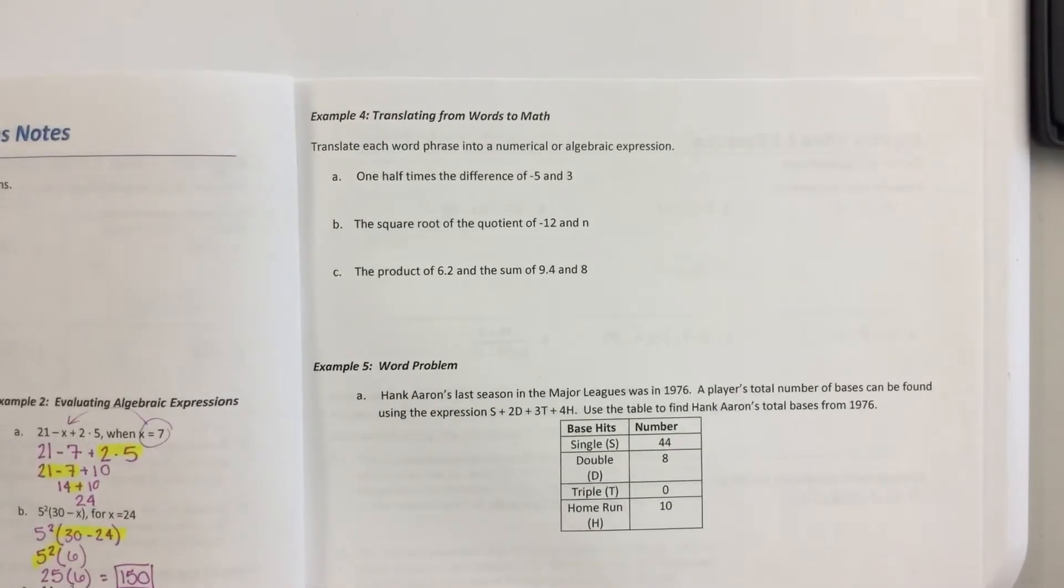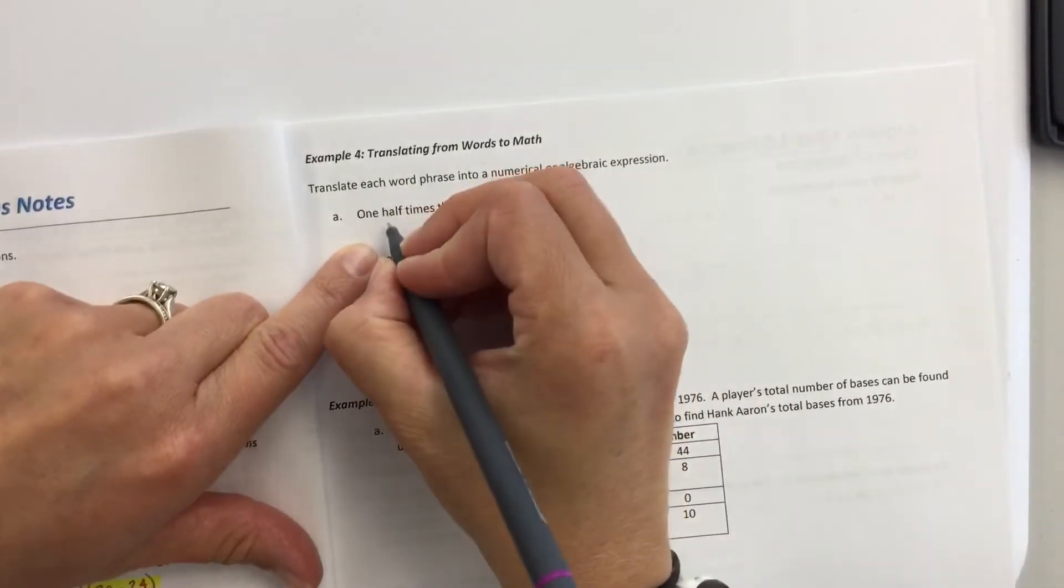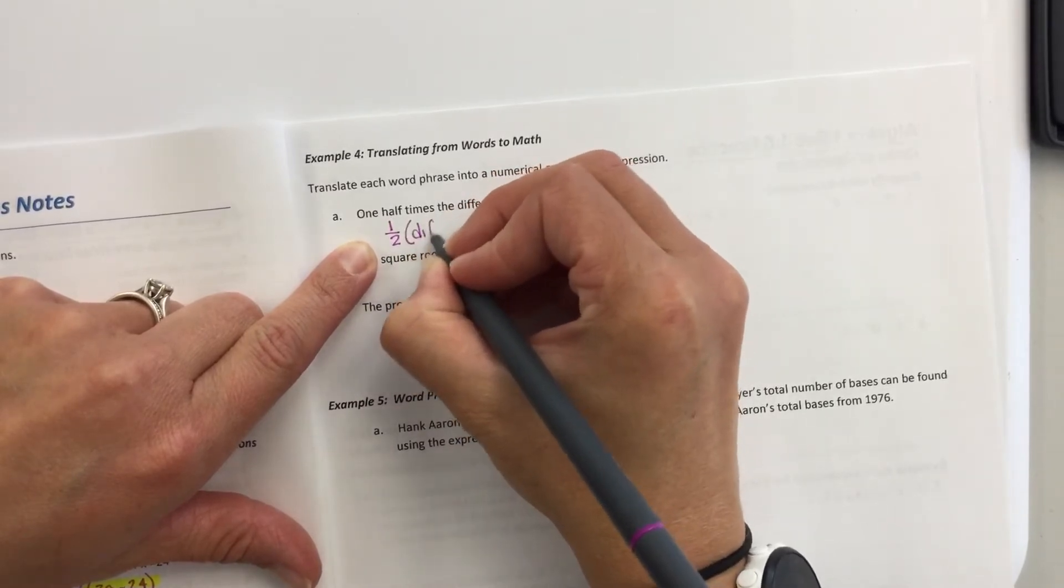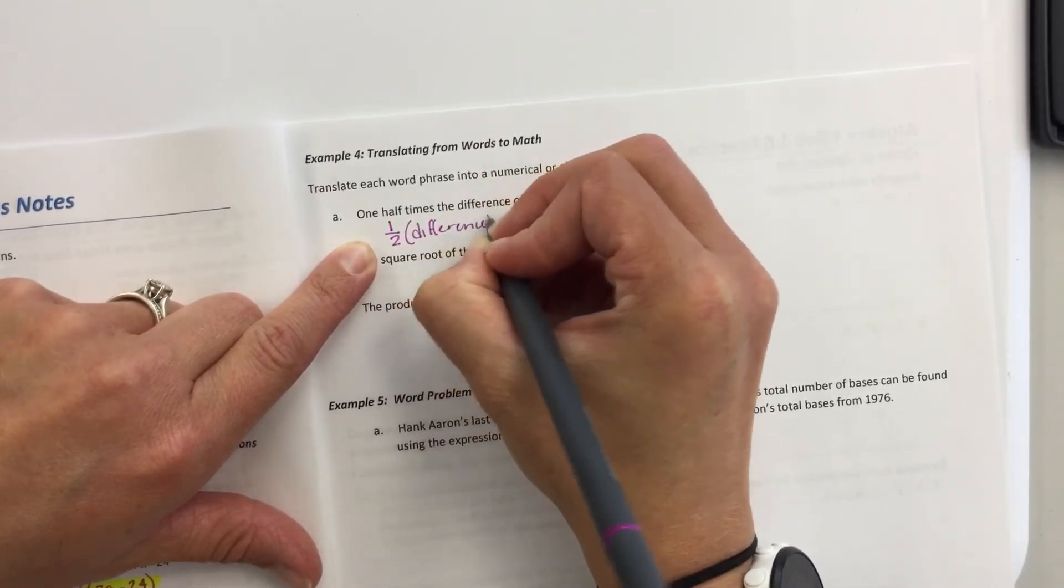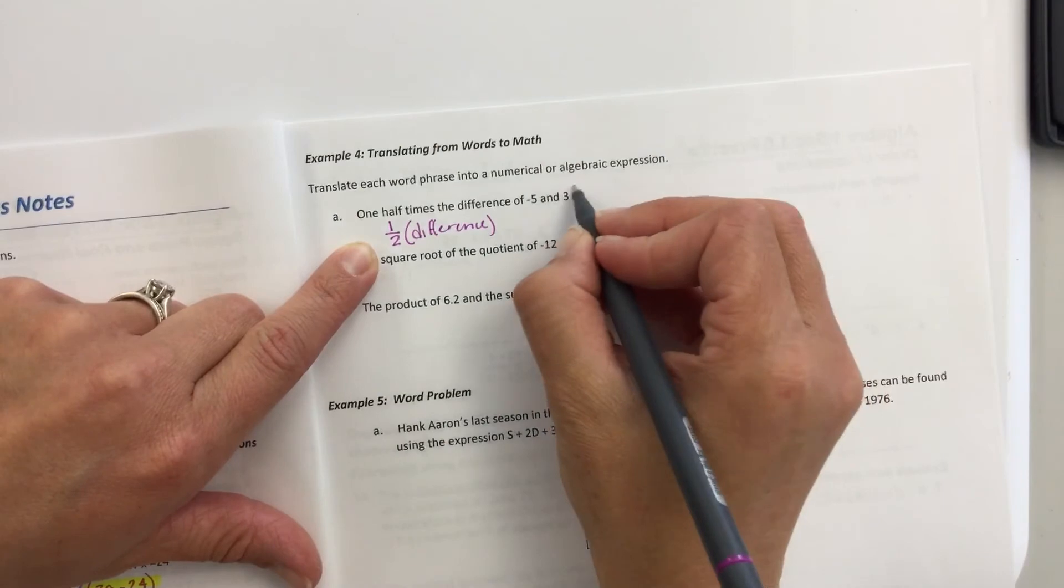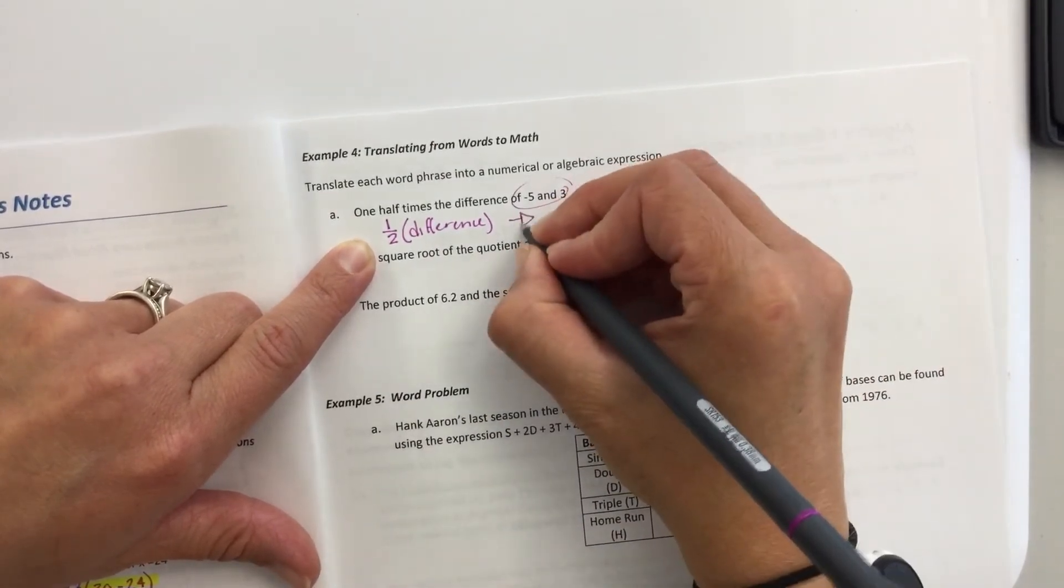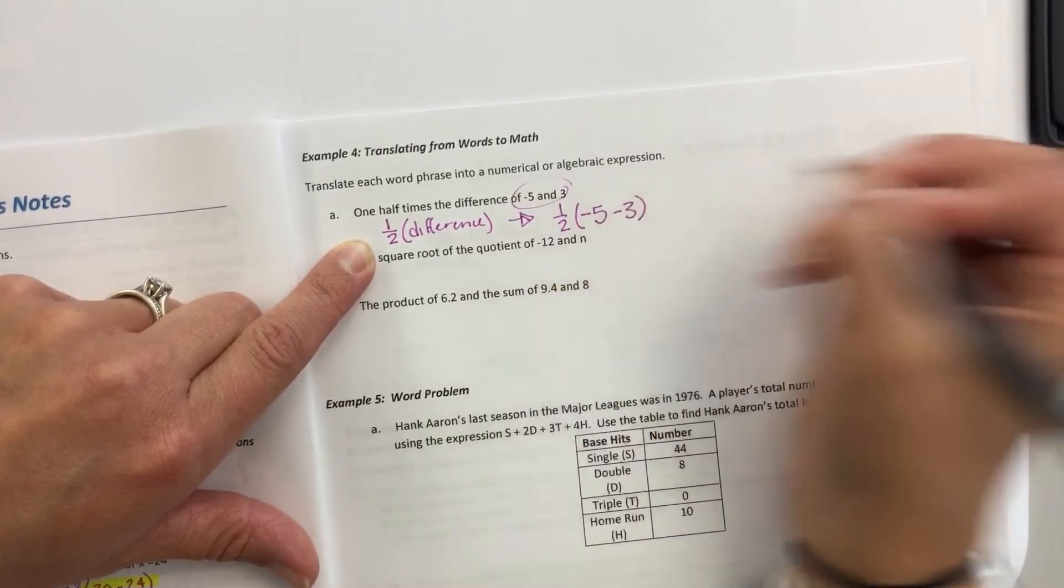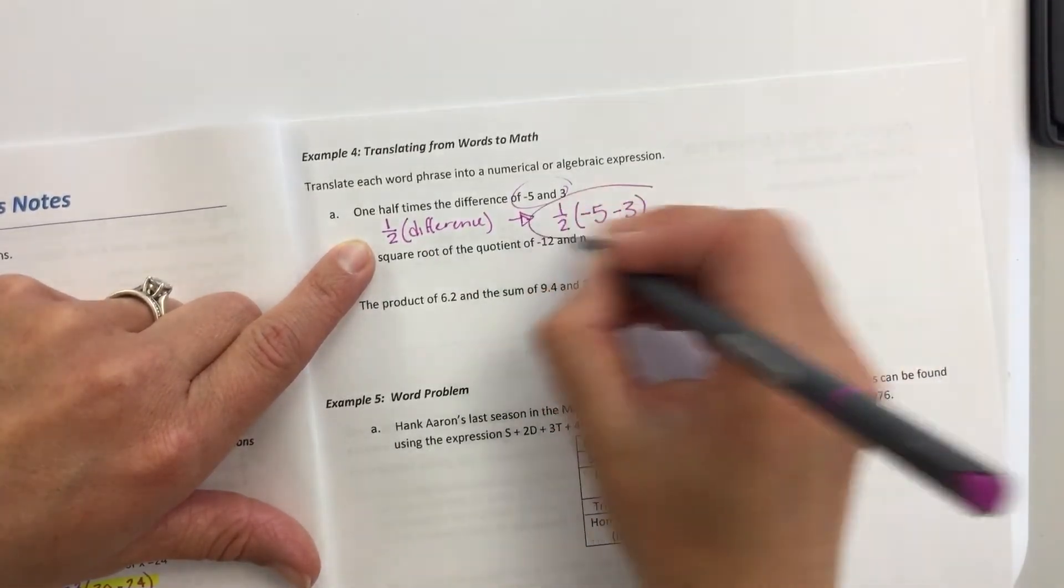Okay. So the last little part here is translating from words to math. It says we just don't have to solve it. We're just going to put it into a numerical or algebraic expression. So 1 half times the difference. So one thing that I practice here is like 1 half times the difference. Well, what are we taking the difference of? Of these. So then it's going to be 1 half times the difference of negative 5 and 3. And that's your answer.